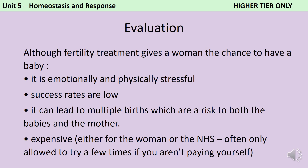On the one hand, fertility treatment may represent the only chance that a couple has of having a biological child of their own. On the other hand, as well as being emotionally stressful, it's also physically taxing for the woman's body and success rates are pretty low. This is why multiple embryos are inserted into the uterus at the same time, but this has a further disadvantage: if more than one embryo implants then you're likely to have twins or even triplets, and multiple births are much more risky than single births. It's also a very expensive process, whether the woman is paying for it herself or using the National Health Service, and this can often mean that couples have to give up before they're successful.